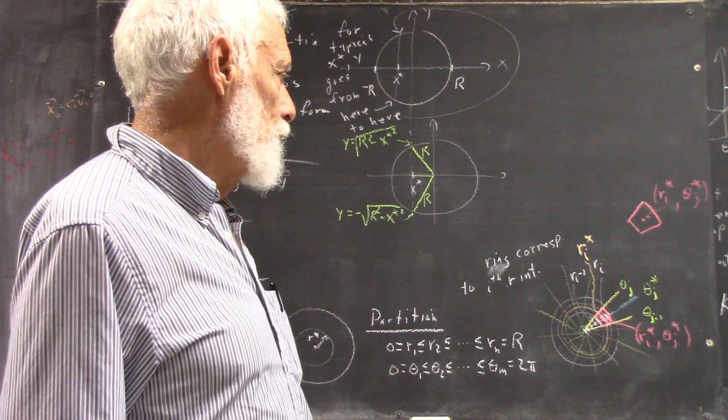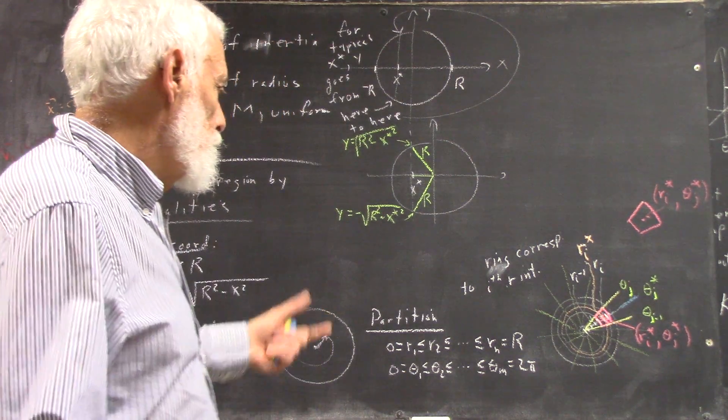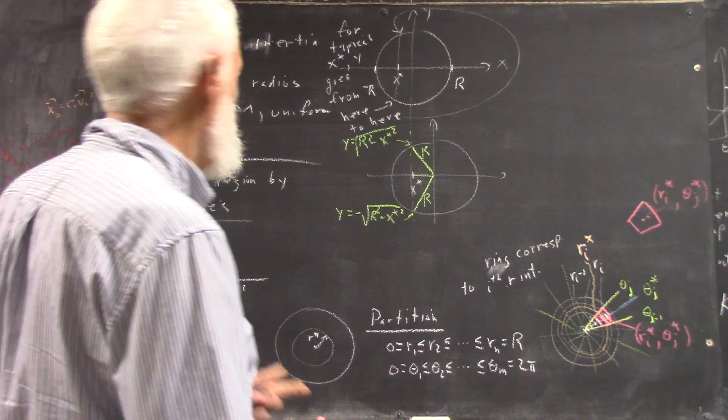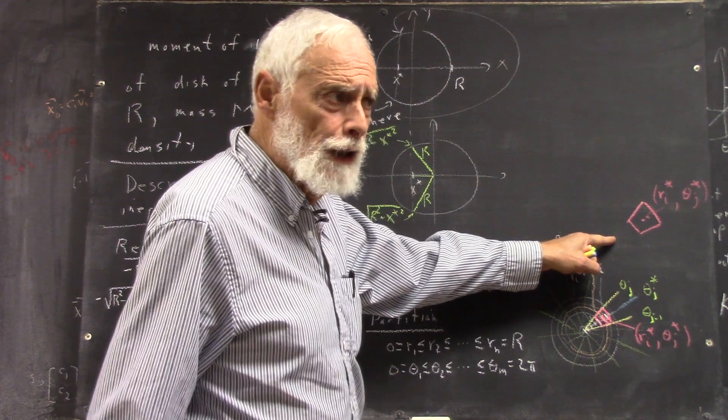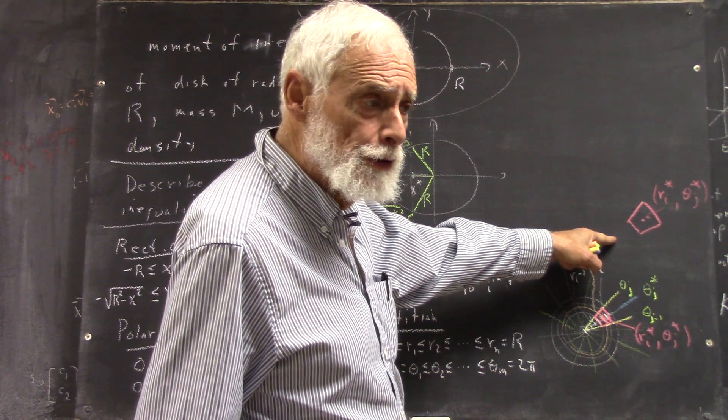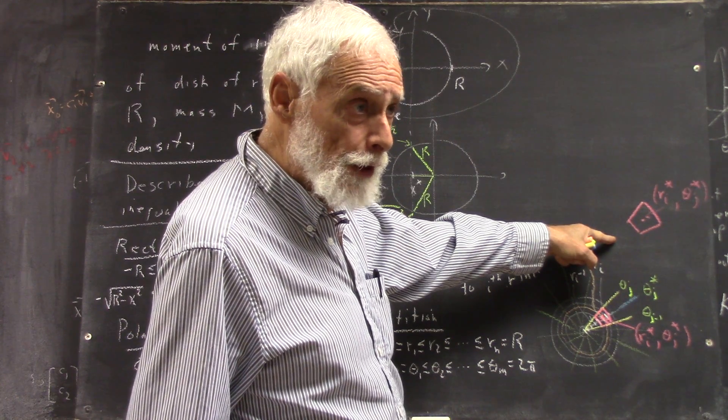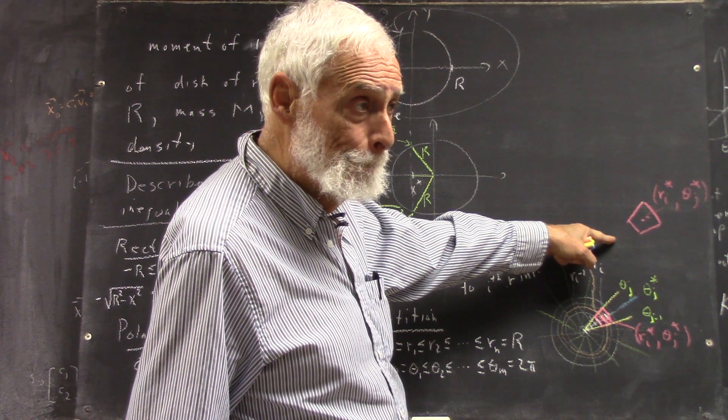And that's actually fairly simple. So, first thing we need, if we want to figure out the mass of this region, and of course you have to have the mass to get the moment of inertia, is the area of this region, right? Is this okay?